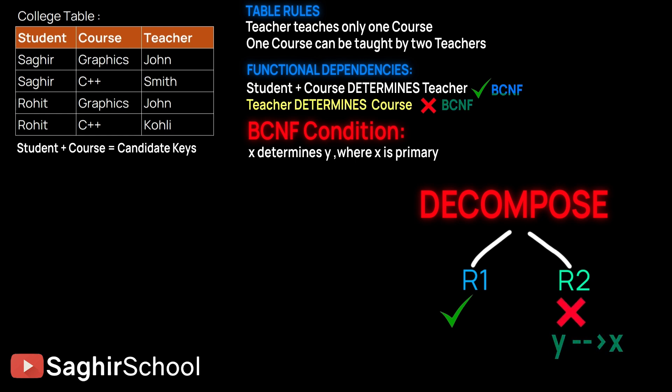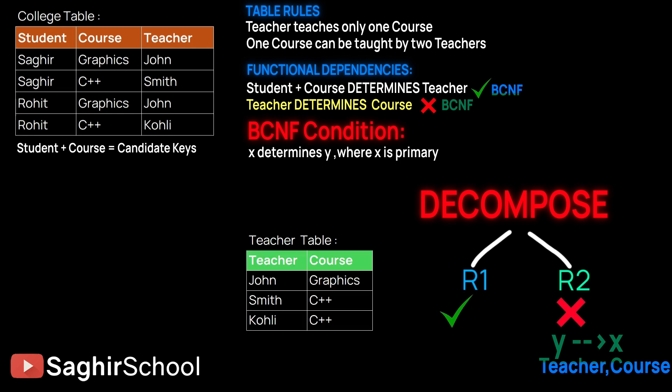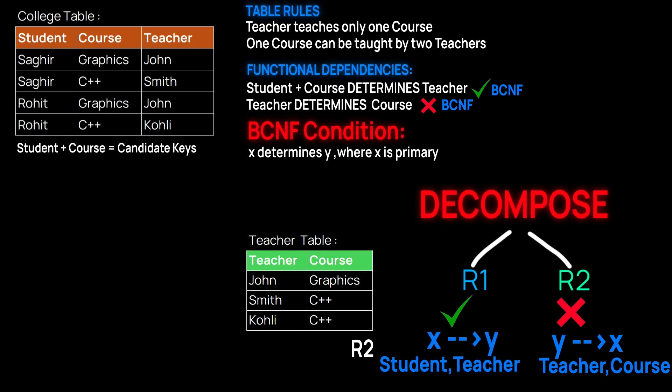We take teacher and course and write them as table R2. For R1, we take the non-prime attribute and the prime attribute that was not part of the problematic dependency, so R1 will have student and teacher. We have now decomposed the original table, which was not in BCNF, into two tables R1 and R2.